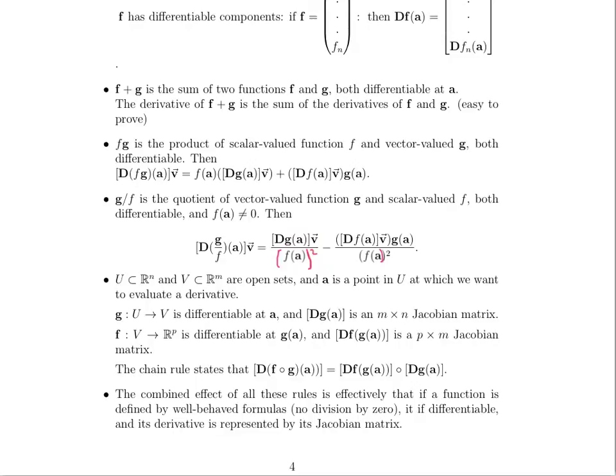says that if we wanted to take d of F composed of G at a, then that would be equal to dF of G of a, and this should be a multiplication sign here just so it's totally clear in your notes. We know that with matrices that that's the same thing as multiplication, but you should note that times dG of a.